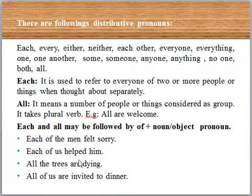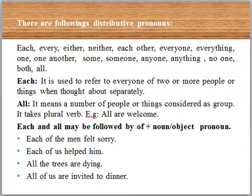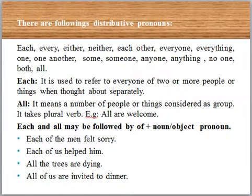Accordingly, the verb with 'all' will also be used as plural. With 'all,' we are pointing to a specific group of people or things — that is why it comes under distributive pronouns — but the verb will be plural because 'all' itself is plural. This is an exception.